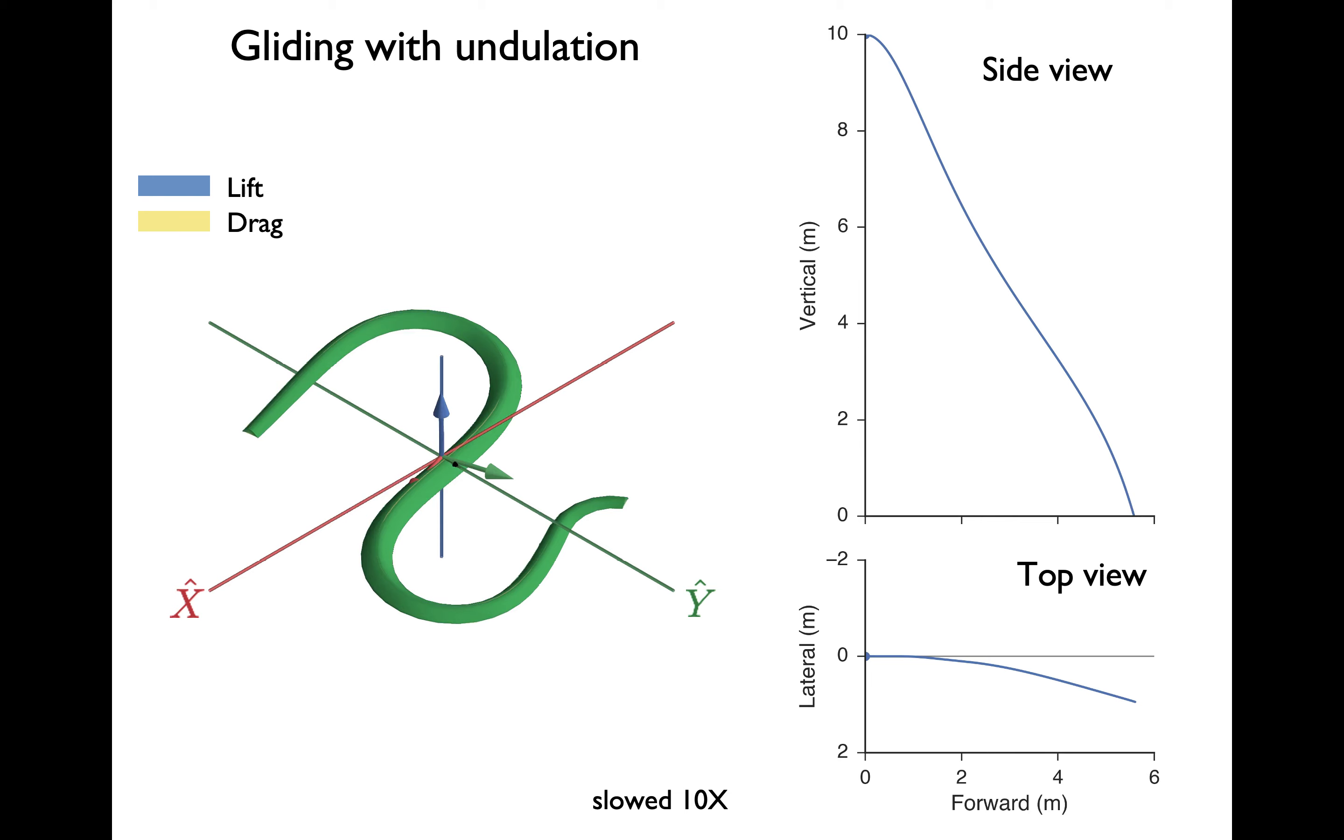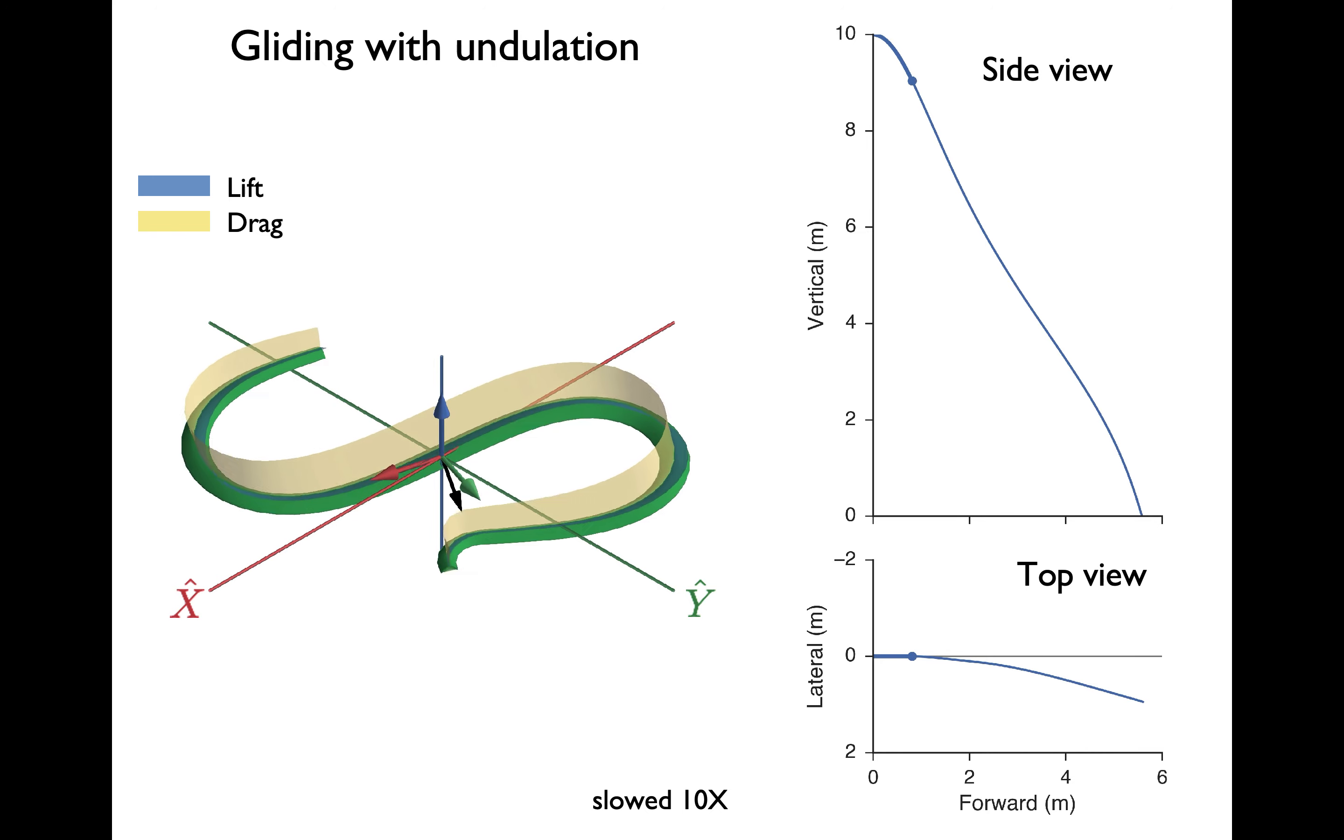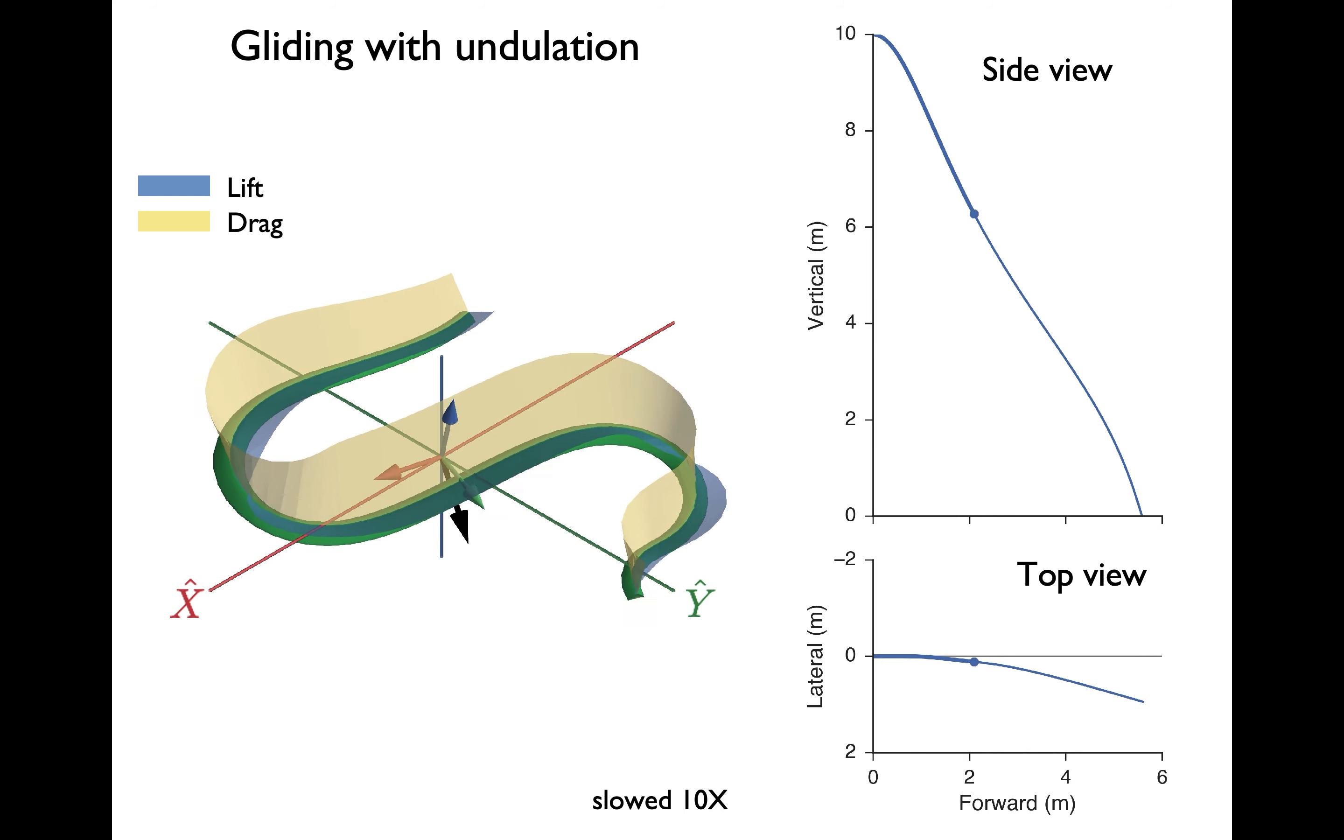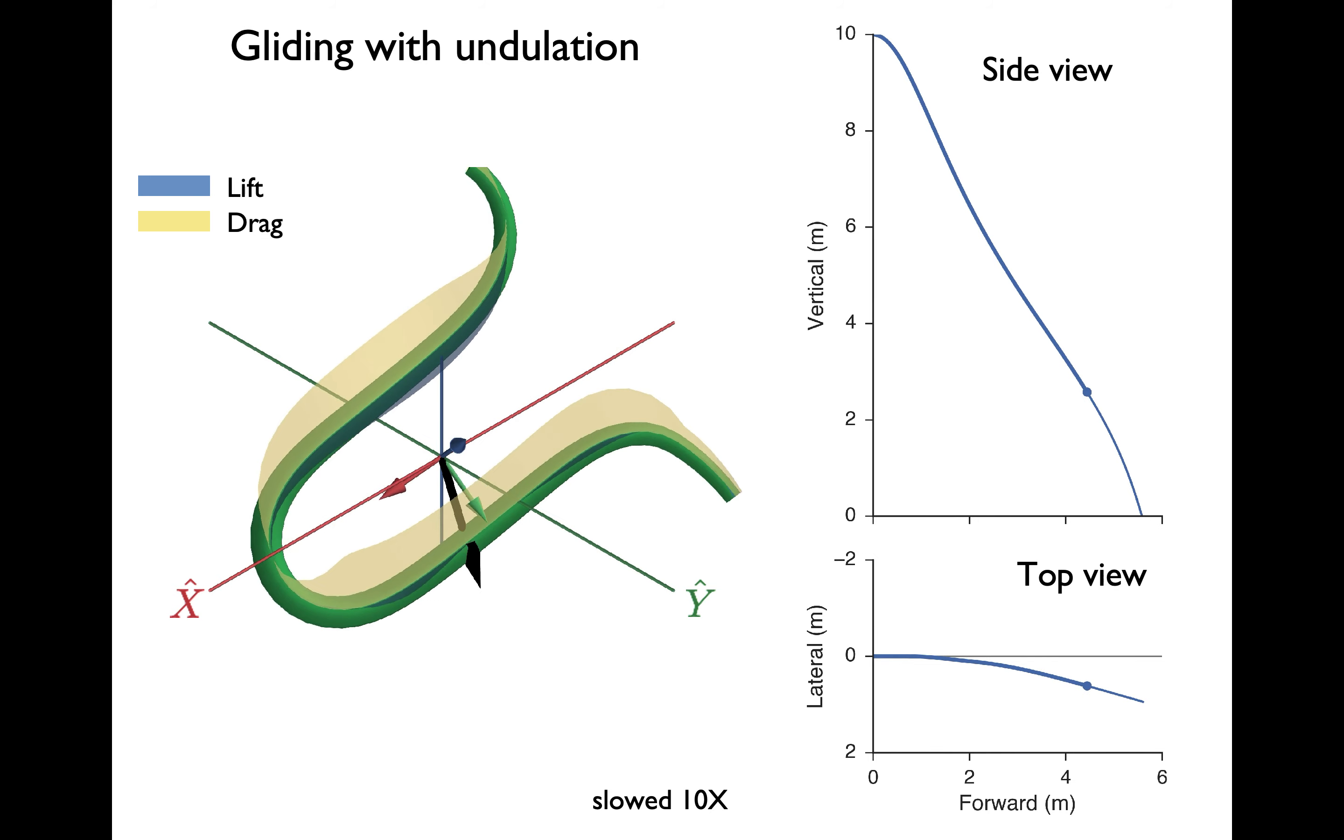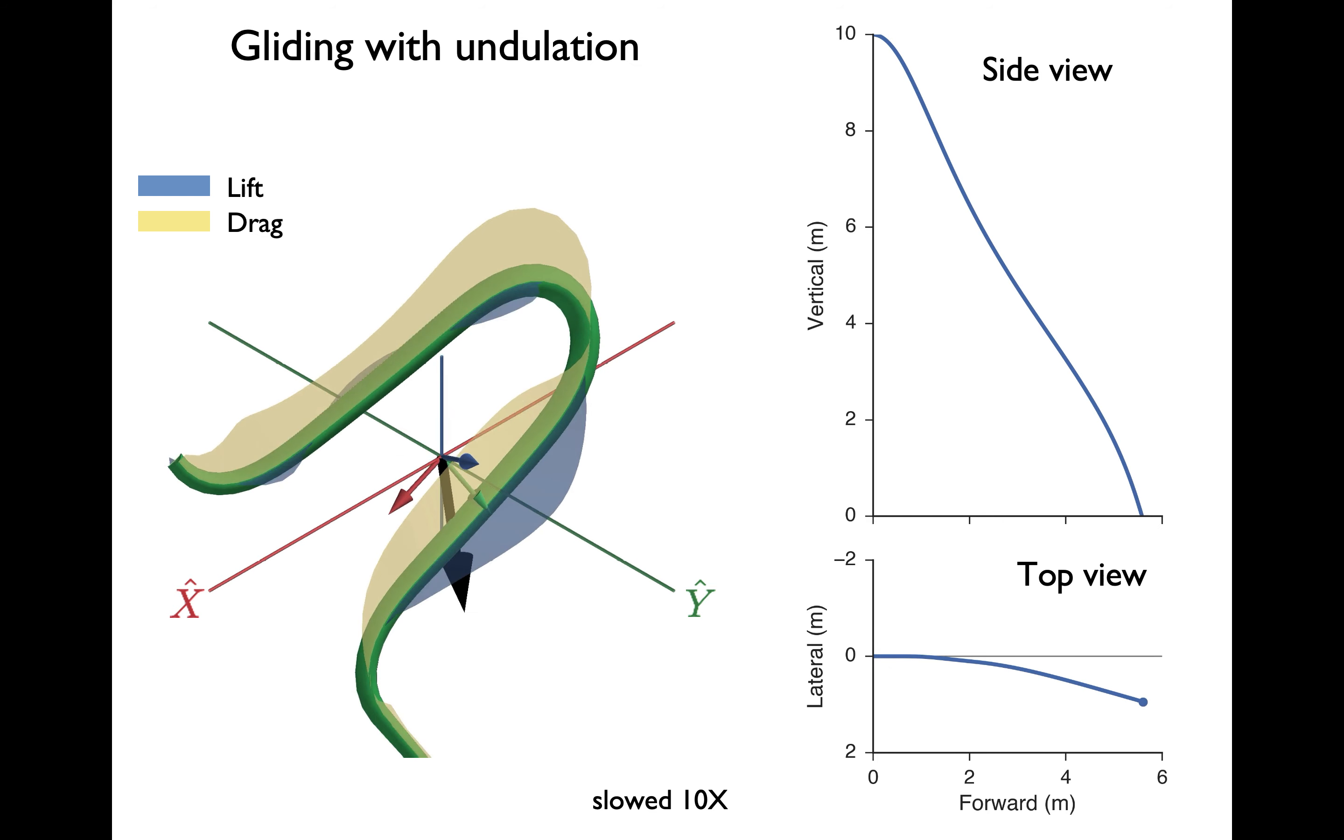Here's the output from the simulation. On the left, I'm just showing the rotational motion with the distributed lift and drag forces overlaid. And on the right, the center of mass position from a side and top view. You see that as the animal falls and picks up speed, it begins to produce forces. And that undulation redistributes how these forces act. You can see the snake rotate side to side, and then once it contacts the ground, we stop the simulation.